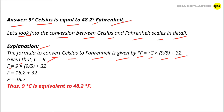Fahrenheit equal to 9 into 9 upon 5 plus 32. Fahrenheit equal to 16.2 plus 32. Fahrenheit equal to 48.2. Thus, 9 degrees Celsius is equivalent to 48.2 degrees Fahrenheit.